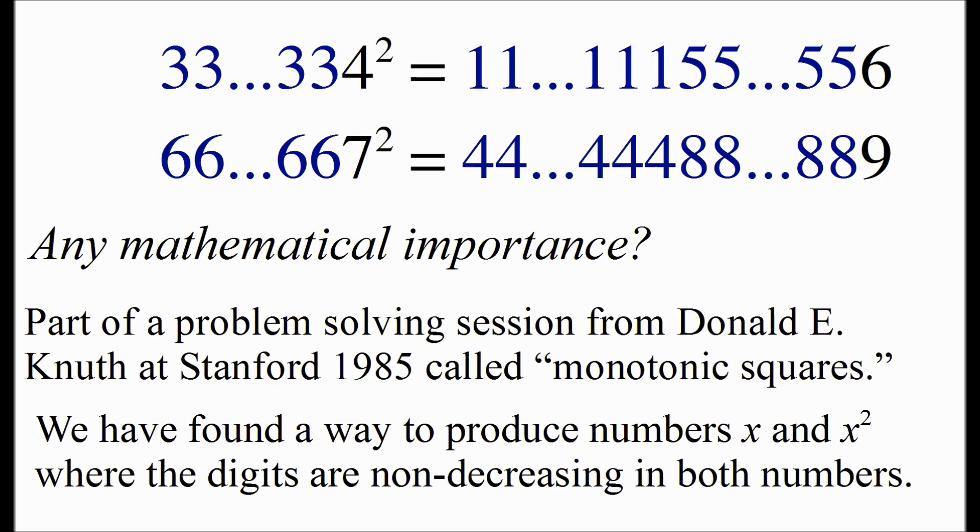So these particular numbers, we clearly have digits in the numbers and their squares which are non-decreasing. And furthermore, since the pattern holds however many number of 3s we have, or however many number of 6s, we've proved that we can produce an infinite number of numbers where x and x squared are non-decreasing.